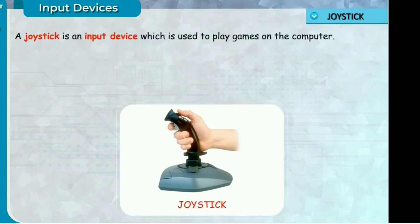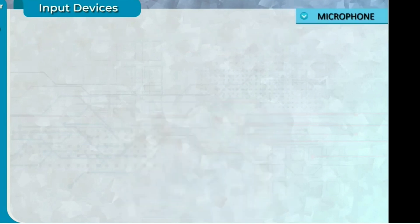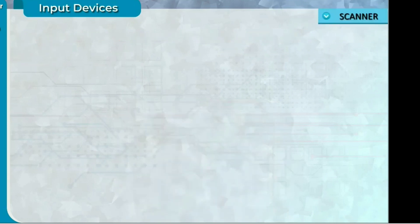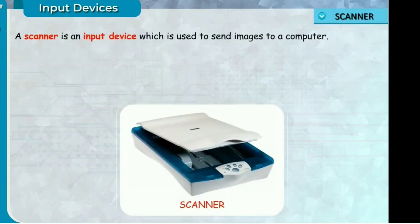Joystick — a joystick is an input device which is used to play games on the computer. Microphone — a microphone is an input device which is used to record the voice and send it into a computer. Scanner — a scanner is an input device which is used to send images to a computer.